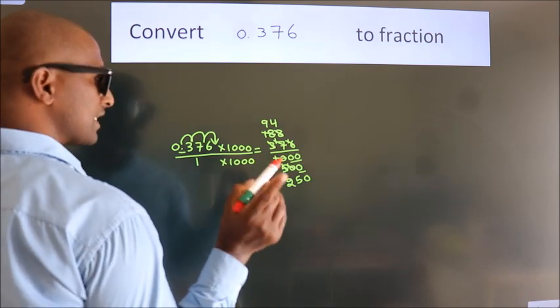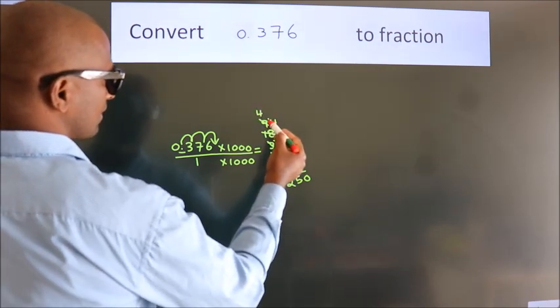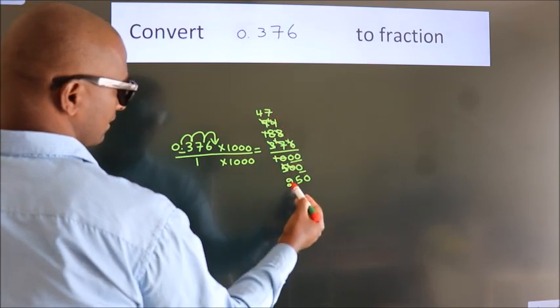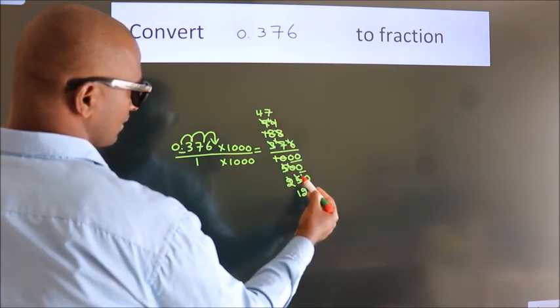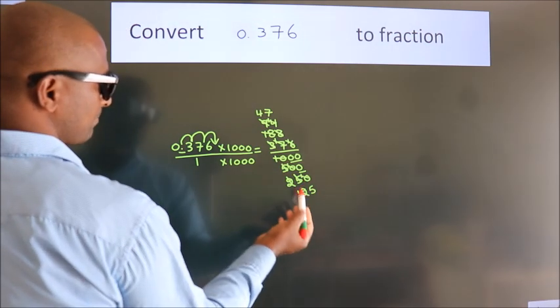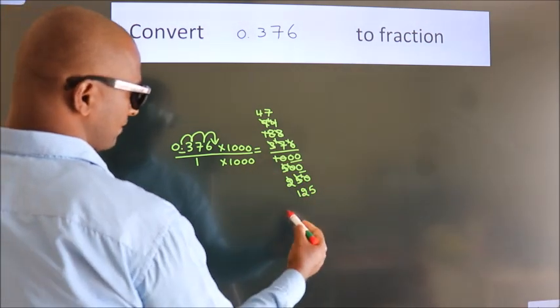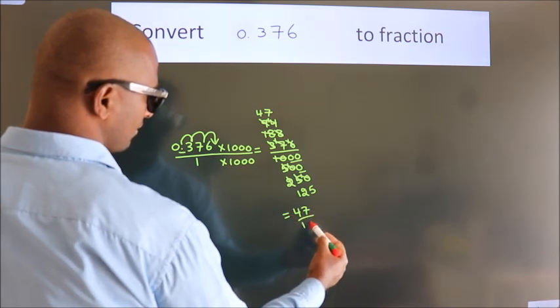I cancel with 2 again. 2 4s, 2 7s, 2 1s, 2 2s, 2 5s. Cannot be simplified further. So our fraction is 47 by 125.